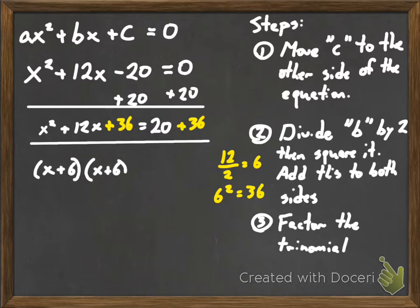So we want to factor the trinomial, and you're going to get x plus 6 times x plus 6, and you're going to get that equals 56. That's just rewritten. We can just rewrite x plus 6 times x plus 6 as x plus 6 squared. So x plus 6 squared equals 56.